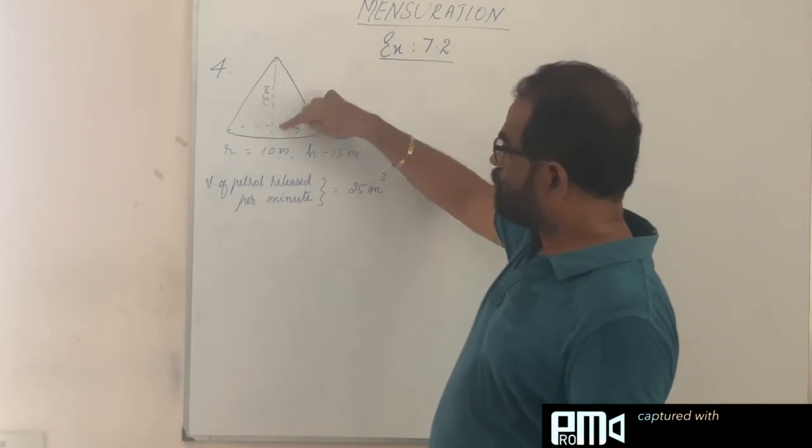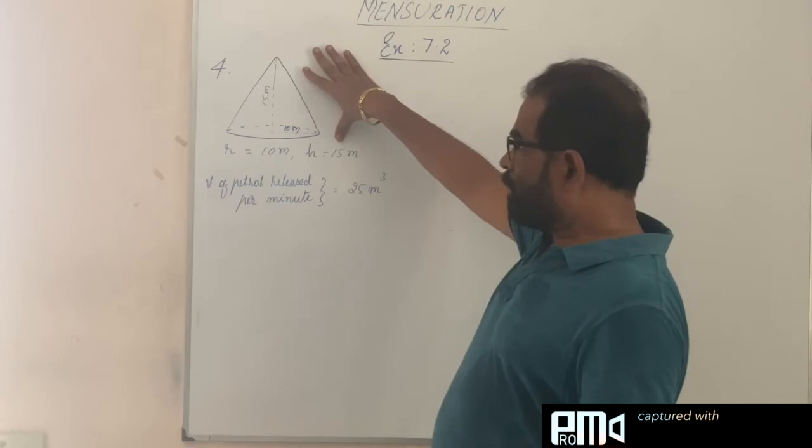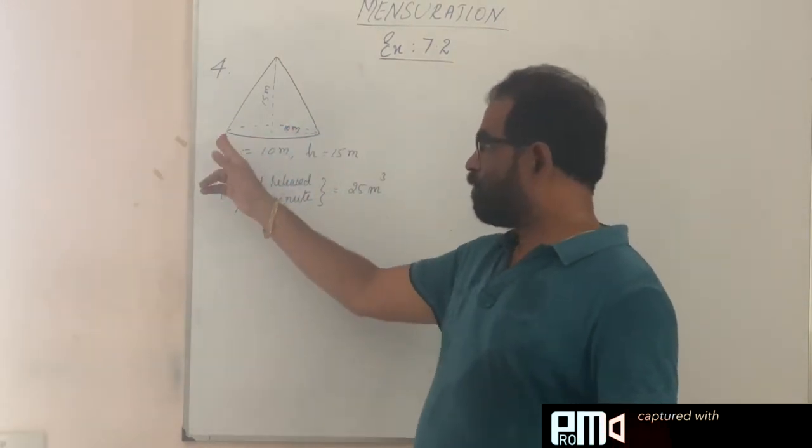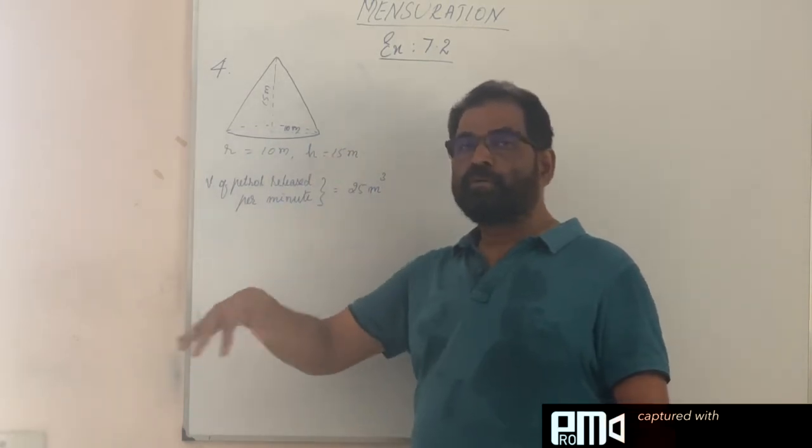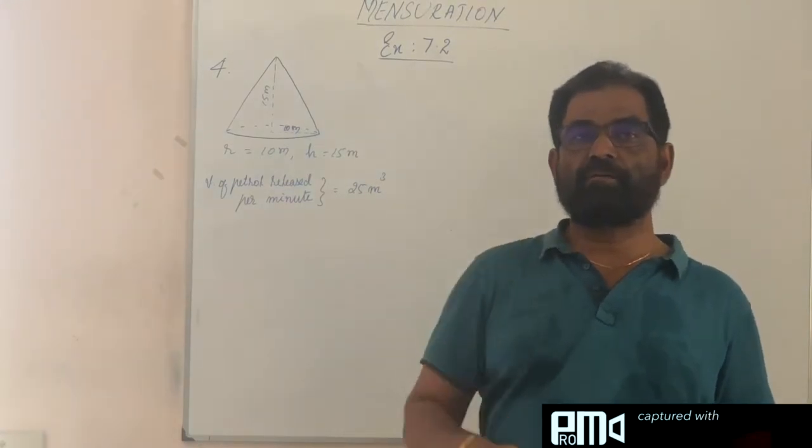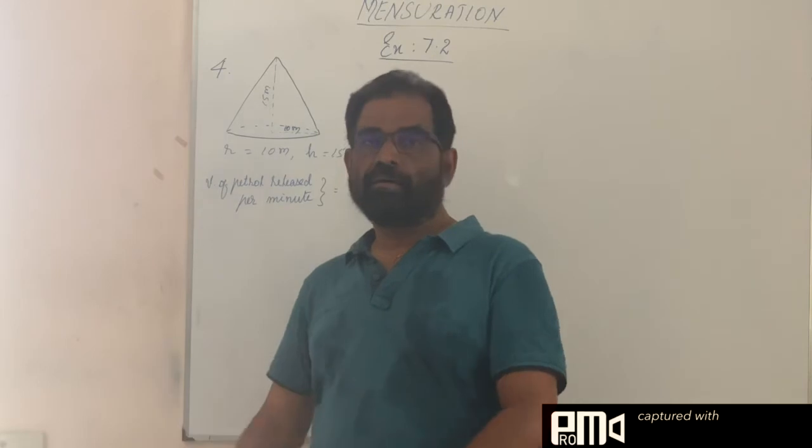Height of it is 15 meters and its radius is 10 meters. And this conical container can release petrol through its bottom, maybe some opening here, through that opening it can release petrol at the rate of 25 cubic meters per minute. In a minute, 25 cubic meters of petrol can be released.